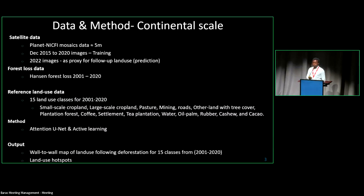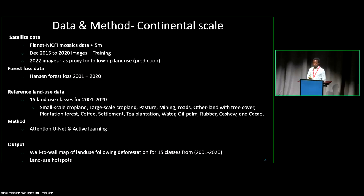We use planet mosaic data, which is available five meter resolution since December 2015 to 2020. For this task, we use those images for training, 2015 to 2020. We use images for 2022 as a proxy for monitoring, seeing what kind of changes has been happening. We use Hansen forest loss data, which is historical forest loss data from 2001 to 2020. We try to identify 15 land use classes. We use attention U-Net and active learning to do the model learning process. In the end, we produce a wall-to-wall map covering 30 degrees north and 30 degrees south of Africa and also try to identify the hotspot of different land use categories.